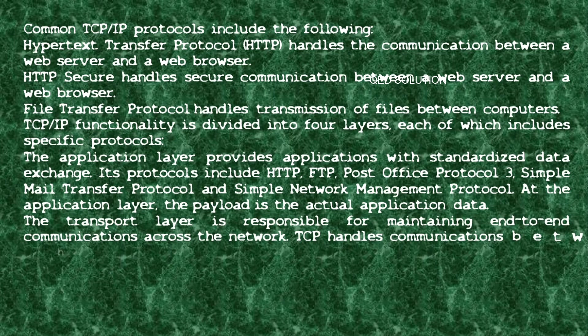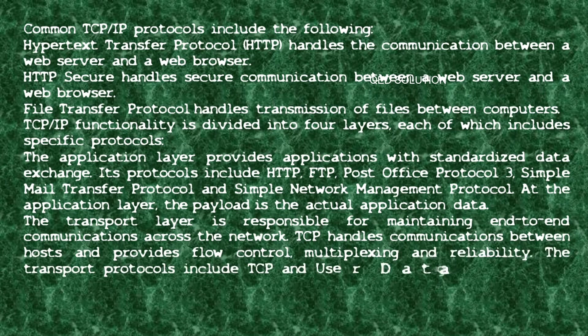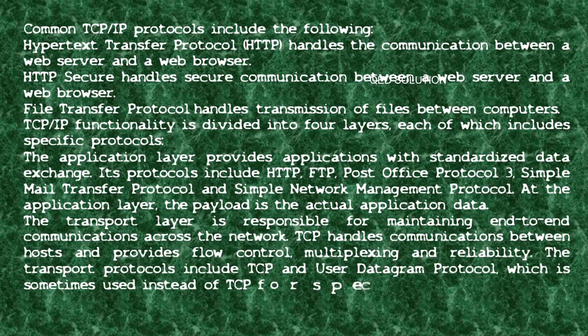Common TCP/IP protocols include: HTTP, which handles communication between a web server and a web browser; HTTPS, which handles secure communication between a web server and a web browser; and FTP, which handles transmission of files between computers. TCP/IP functionality is divided into four layers, each of which includes specific protocols.